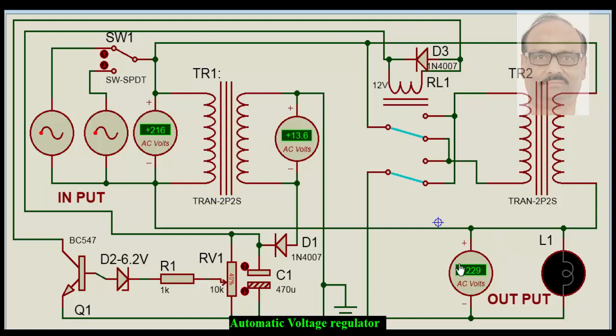While this relay operates, this works like this. When the voltage goes high, this relay changes over to this, subtracting the voltage. From 246 volts, it subtracts this voltage and we get 230 volts.